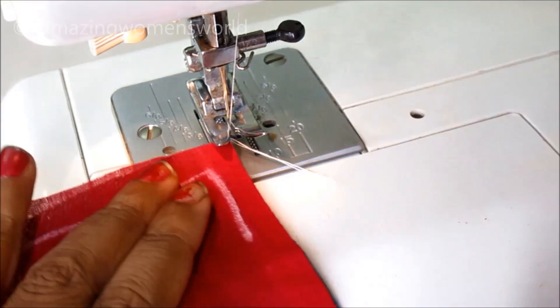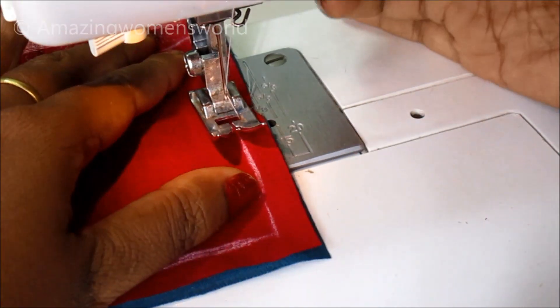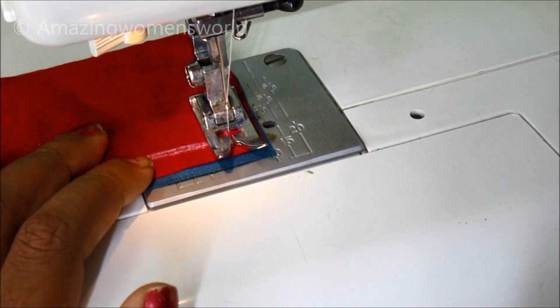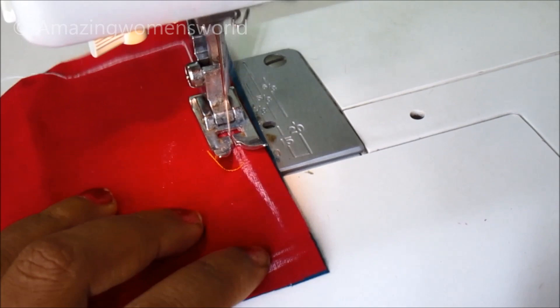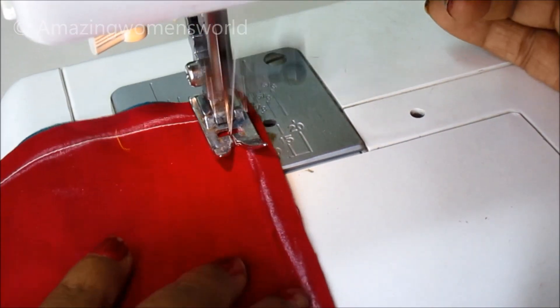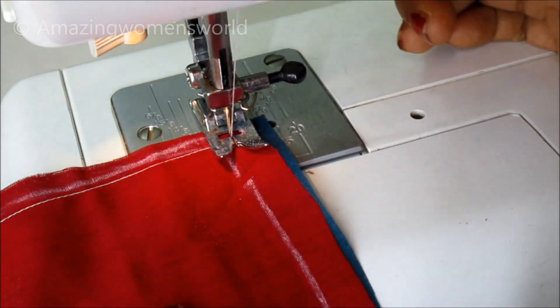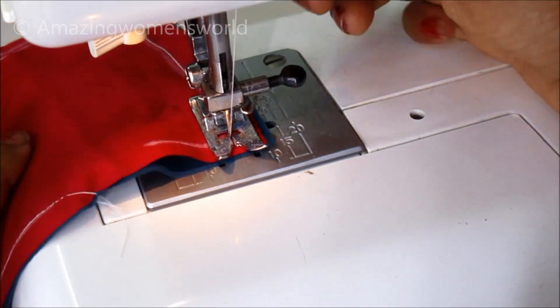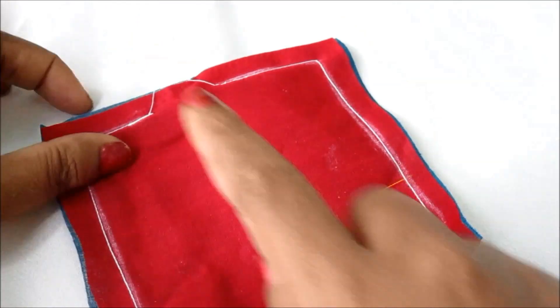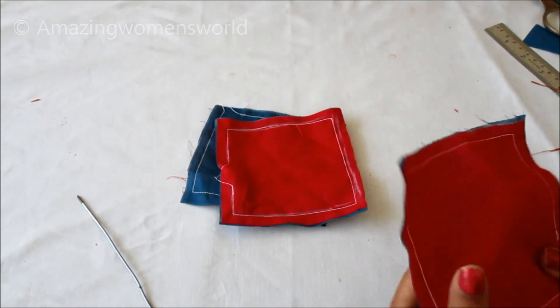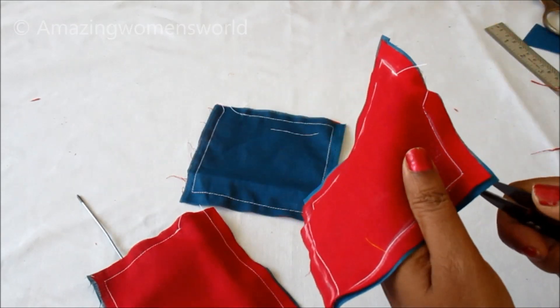As I said, with the quarter inch seam allowance, stitch on the sides to join these two. The remaining patches also I'll stitch the same, leaving the gap of an inch. Now I'll flip to the right side, giving the slits at the corners so that we'll get the perfect shape of the square.